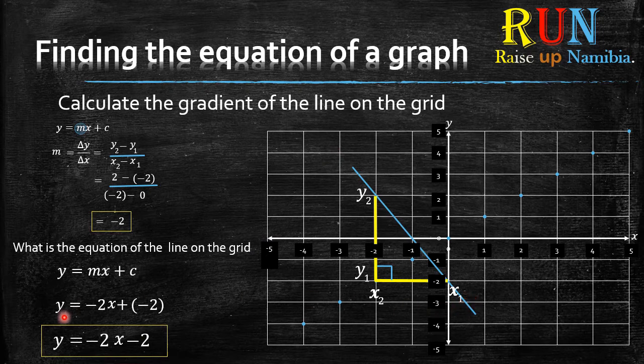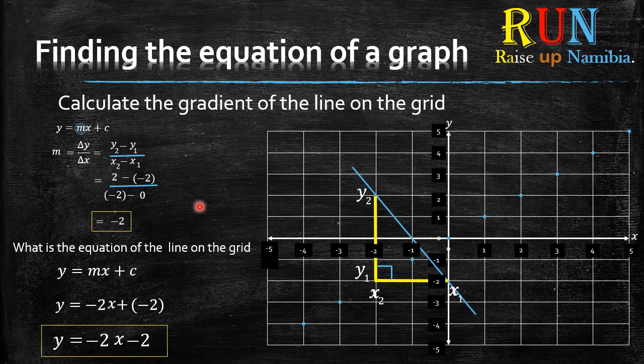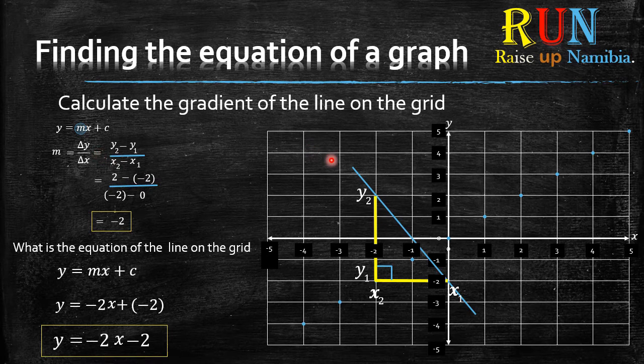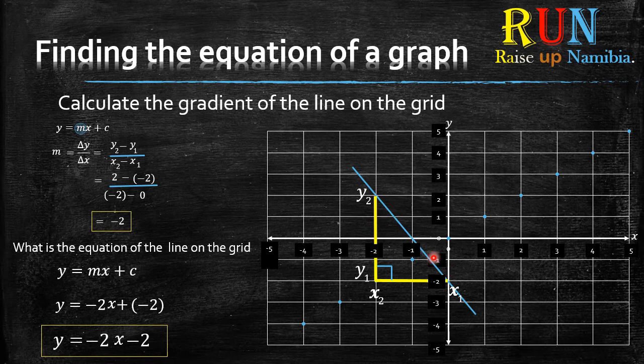Easy, isn't it? So for you to be able to find the equation, rule number one, just know how to find the gradient. And then the next thing is spot where the line crosses the y-axis.